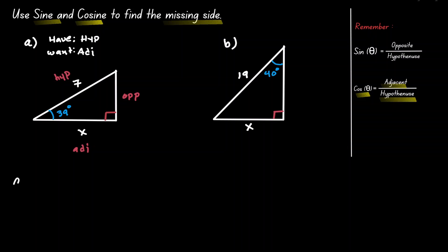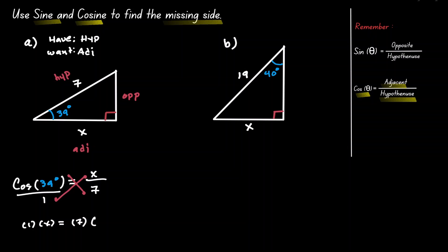So let's plug in that information. The cosine of 39 degrees is equivalent to the adjacent, which is x, over the hypotenuse, which is 7. On the left-hand side, let's divide it over 1 so we can see that we want to cross-multiply. So we're going to have 1 times x, and then 7 times the cosine of 39 on the right-hand side. So now we have an expression for x: x is equivalent to 7 times the cosine of 39.